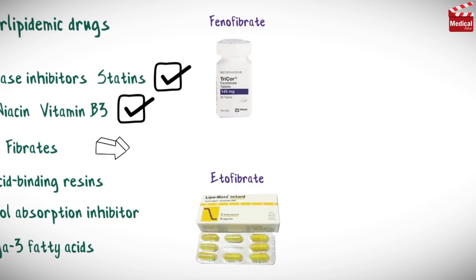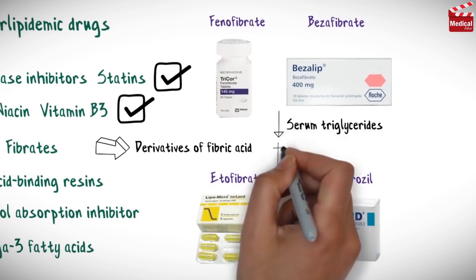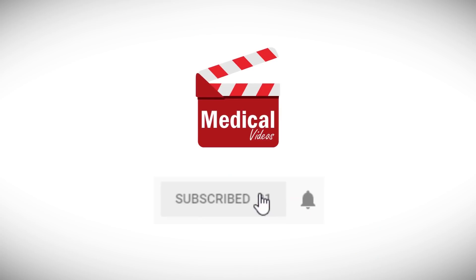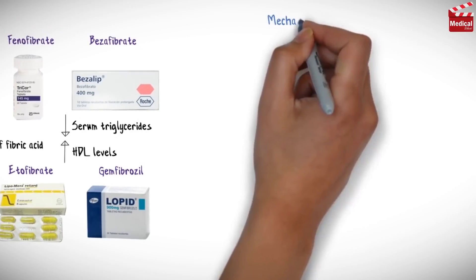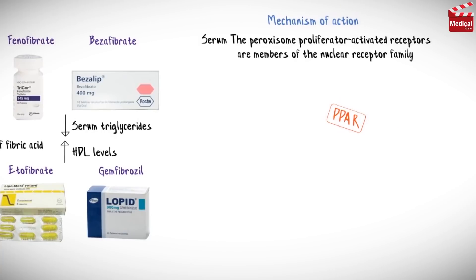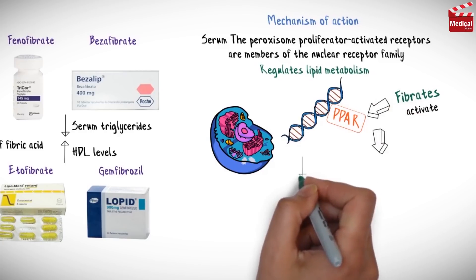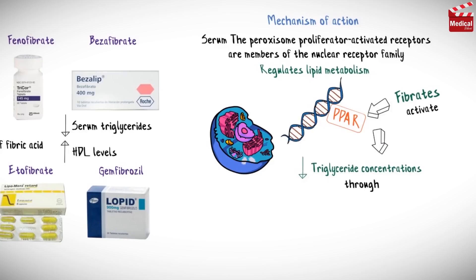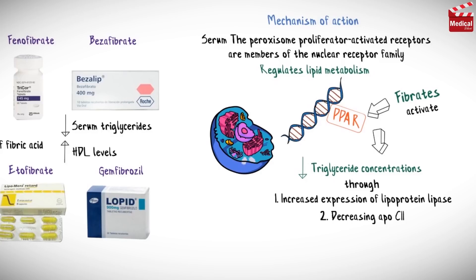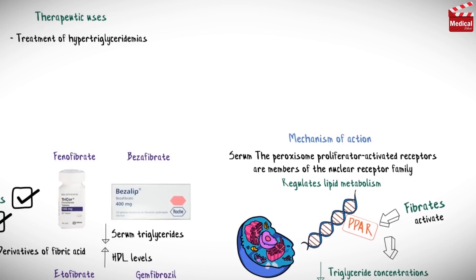Fenofibrate, etofibrate, bezafibrate, and gemfibrozil are derivatives of fibric acid that lower serum triglycerides and increase HDL levels. The peroxisome proliferator-activated receptors (PPARs) are members of the nuclear receptor family that regulate lipid metabolism. Fibrates activate these receptors, leading to decreased triglyceride concentrations through increased expression of lipoprotein lipase and decreased apolipoprotein C2 concentration. Fibrates also increase HDL cholesterol by increasing the expression of apo A1 and apo A2. They are used in the treatment of hypertriglyceridemias.